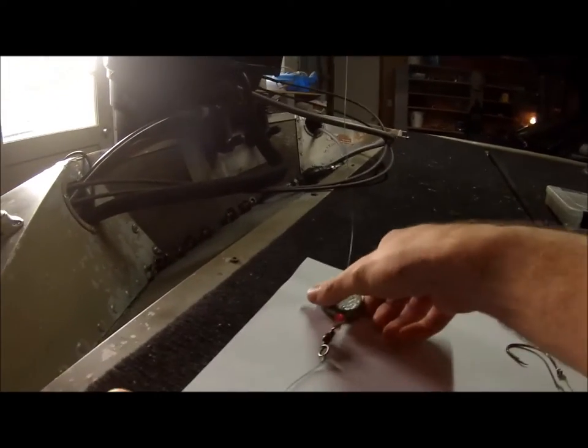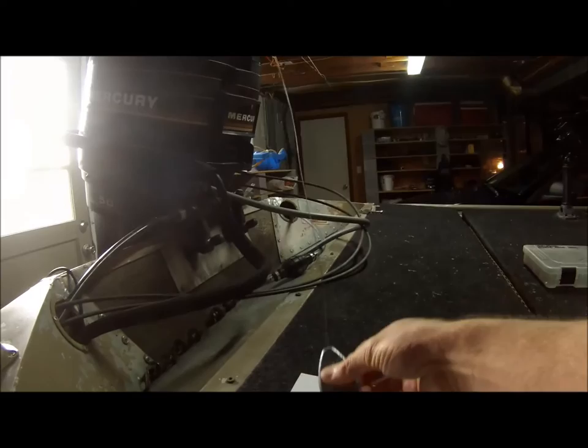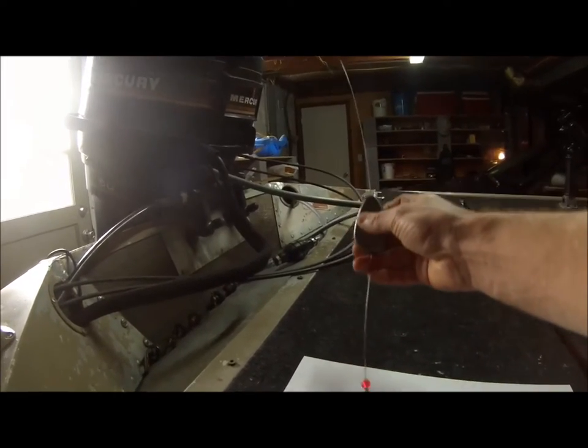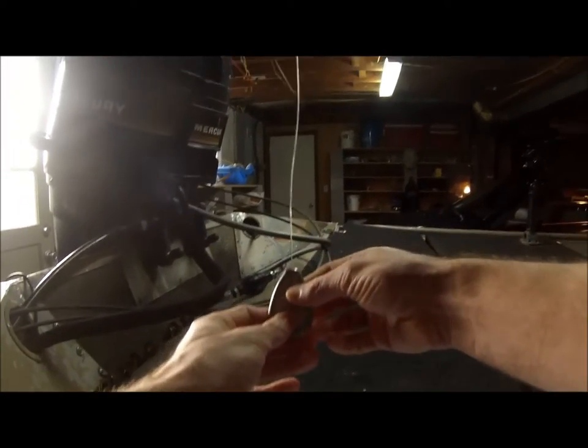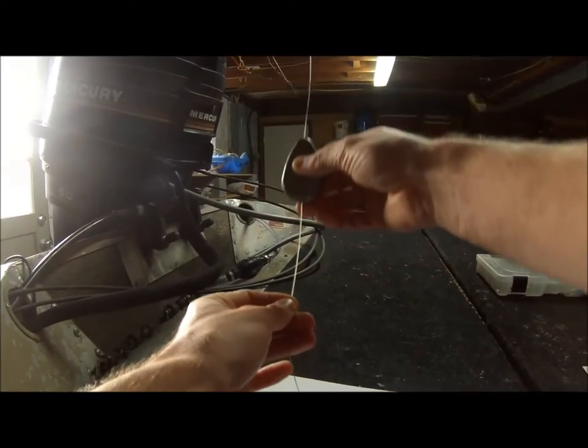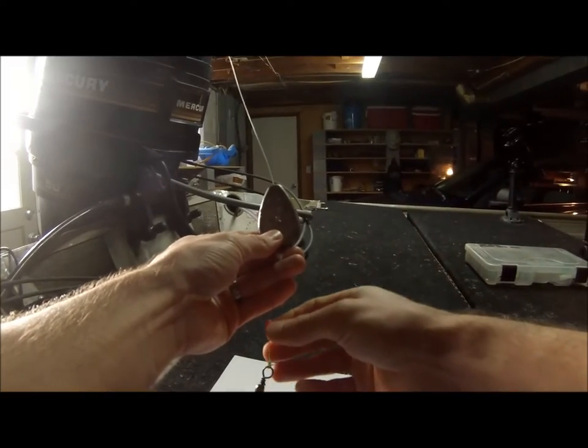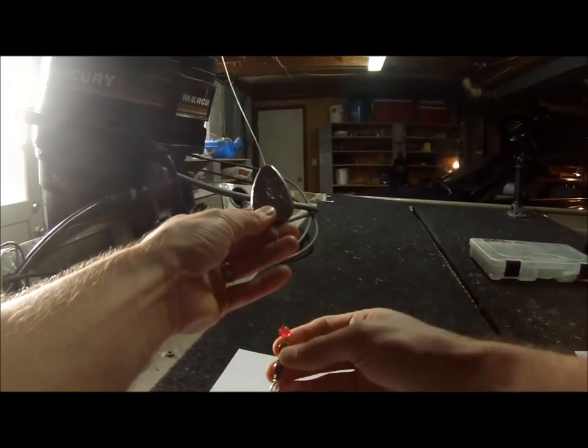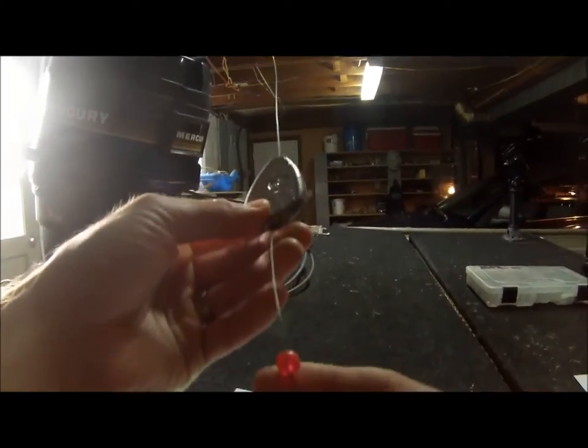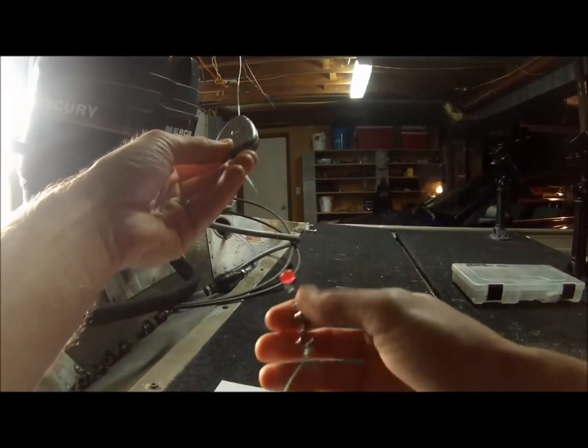So what I have here is a 50 pound monofilament fishing line and I have a no roll sinker. The no roll sinker's purpose is to slide up and down freely on your main line. And I then have that going down to a bead with a knot. And the knot is an improved clench knot going down to a barrel swivel.